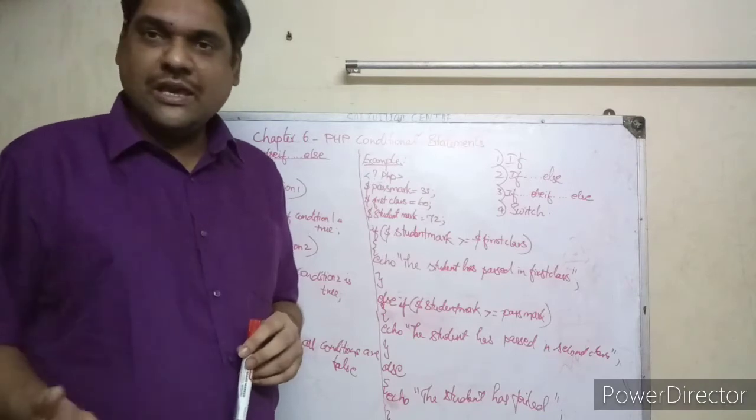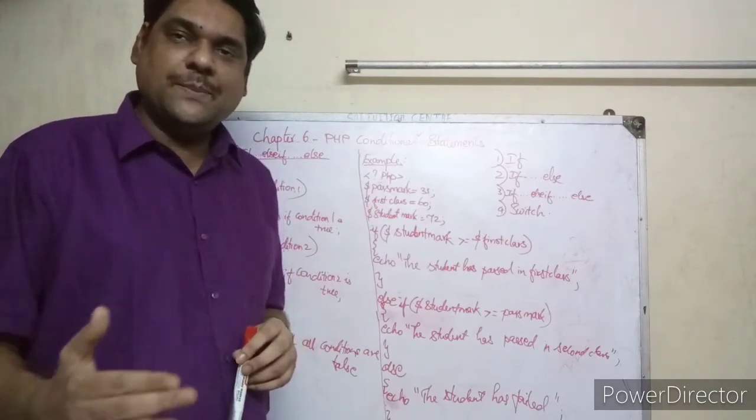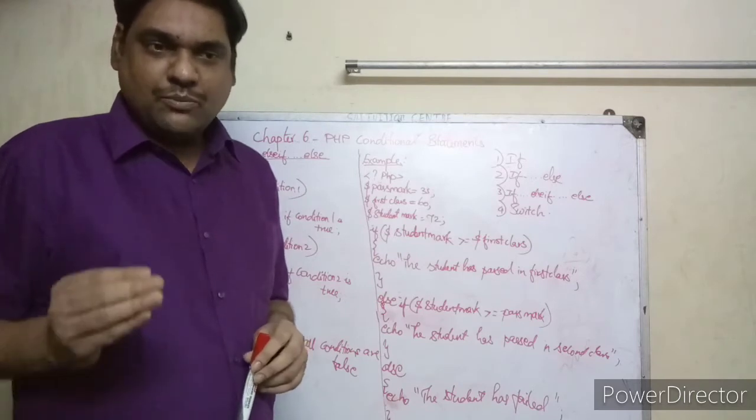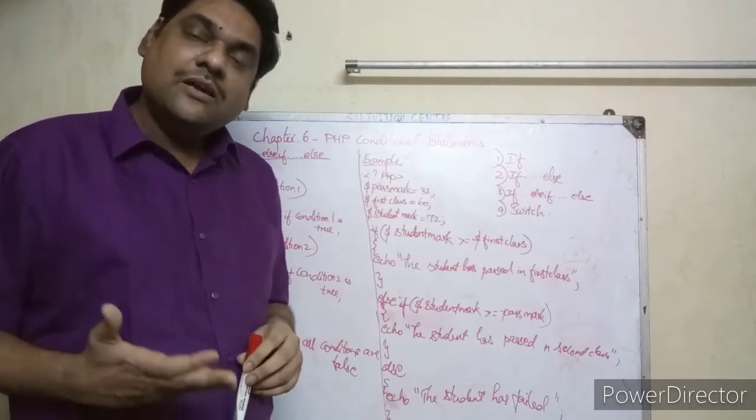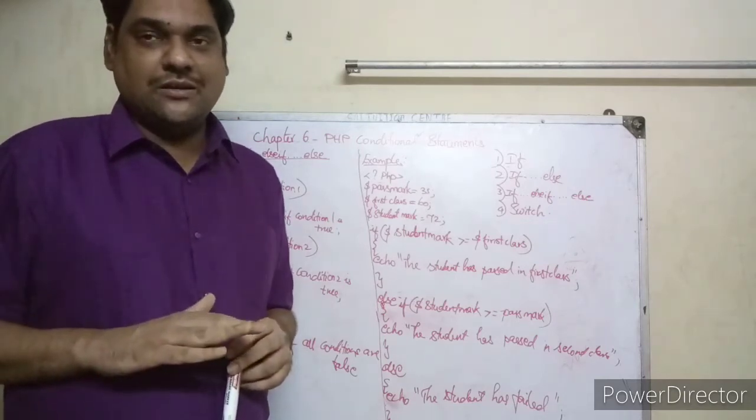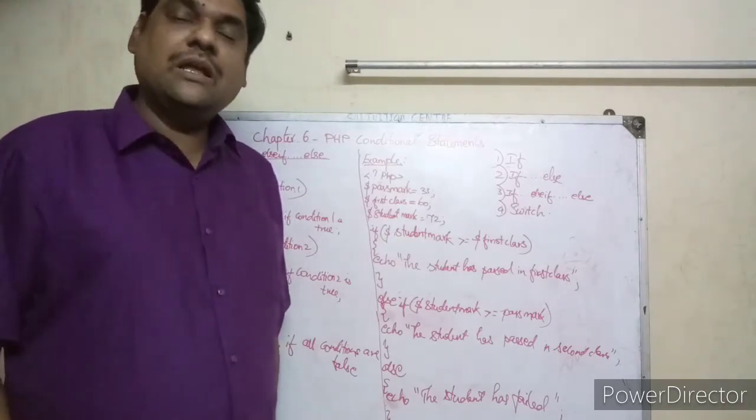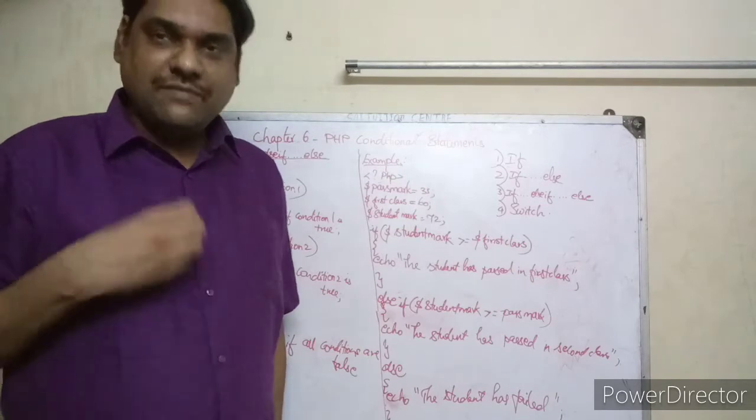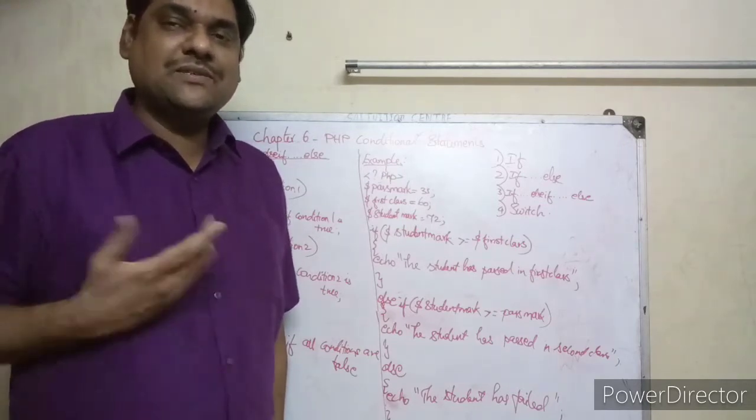Suppose 60 marks or above, we should print that he has passed in first class. Suppose below 60 marks but above 35 marks, at least he has passed in second class. If below 35 marks, that means he has failed.